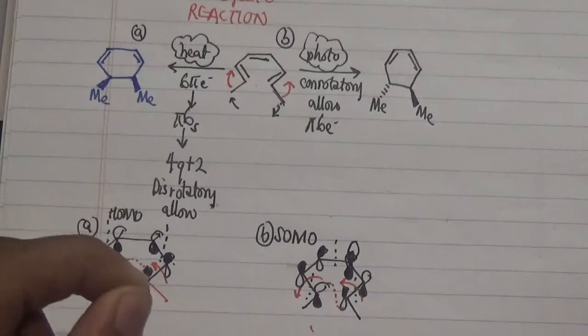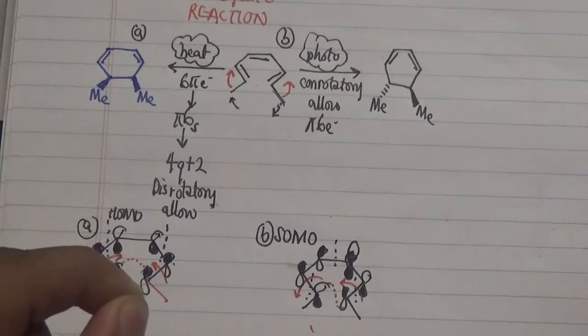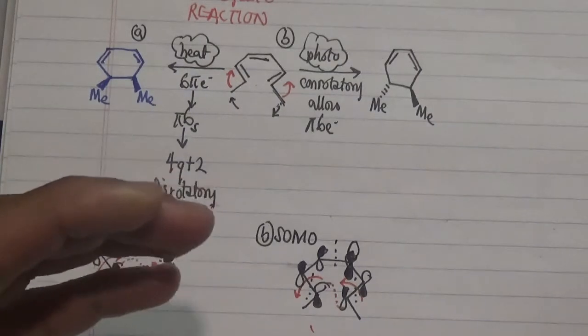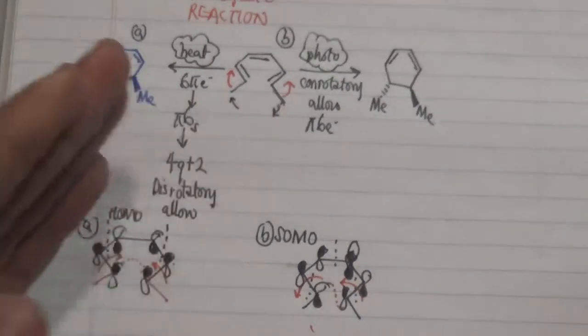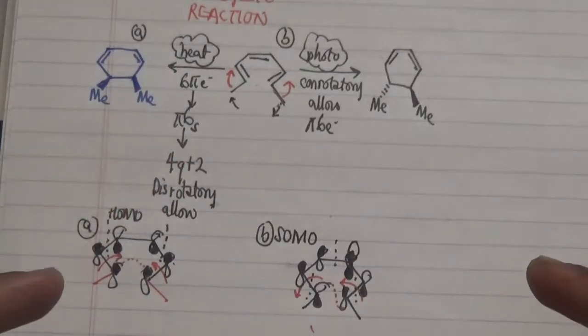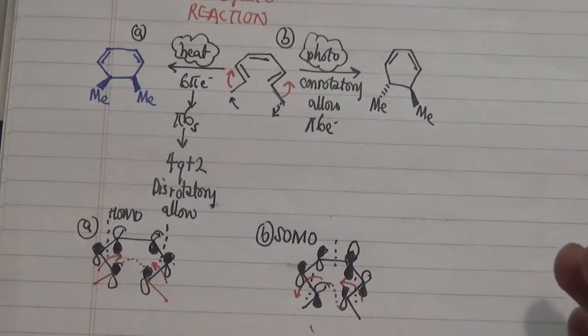In our previous video we talked about photochemical electrocyclic reactions and how these reactions are actually different from the thermal process in terms of flipping their roles in terms of disrotatory to conrotatory processes.